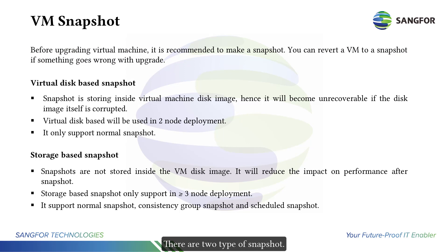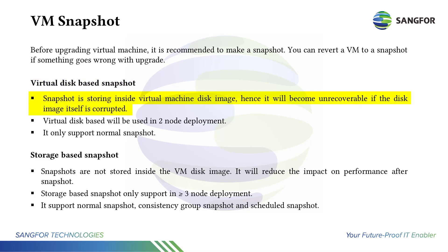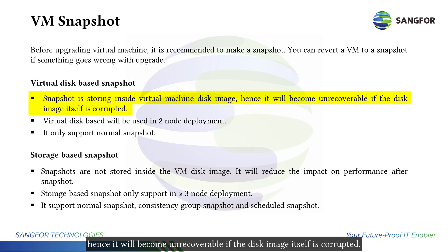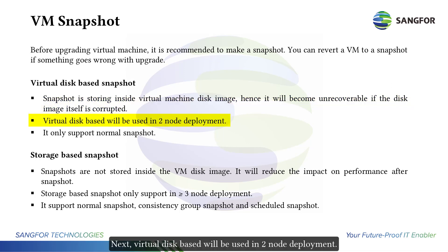There are two types of snapshots. First, virtual disk-based snapshot: the snapshot is stored inside a virtual machine disk image. It will become unrecoverable if the disk image itself is corrupted. Virtual disk-based snapshots will be used in two-node deployment and only support normal snapshots.